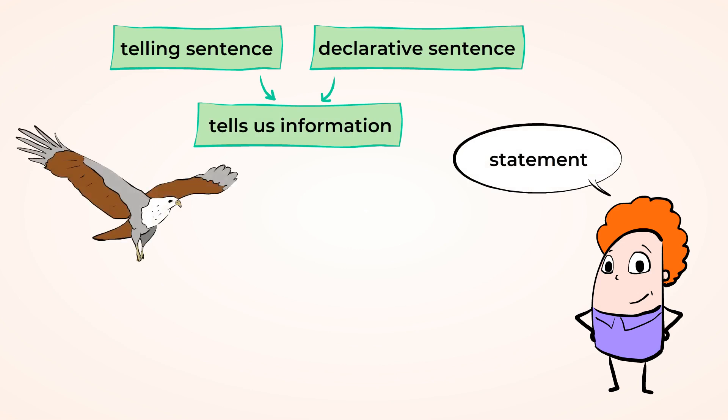Here are some telling sentences about this eagle. The eagle is brown and white. It has a beak. It can fly.